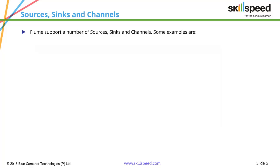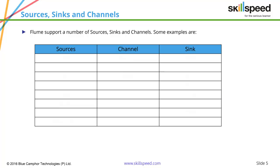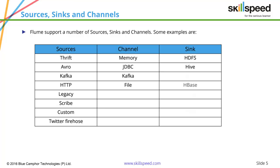If you look at the sources, you can see that there are sources like Twitter — for collecting Twitter tweets. You also have popular sources such as Thrift, Avro, and Kafka. For the channel, you usually have a memory channel, which is the buffer of your system, and a file channel, which is the persistent hard disk storage. For the sink, you can commit data to HDFS, Hive, HBase, or even Kafka or Elasticsearch.